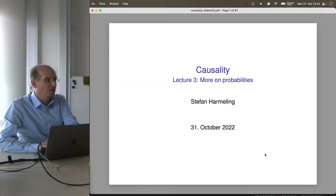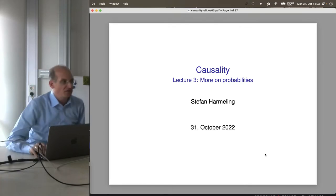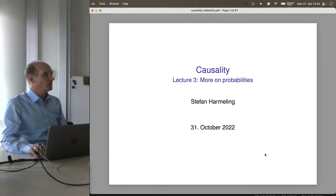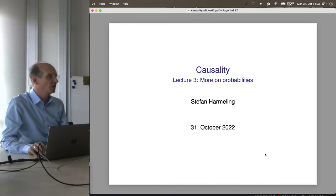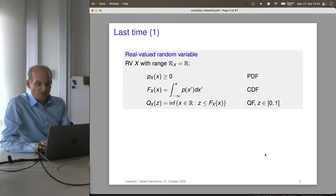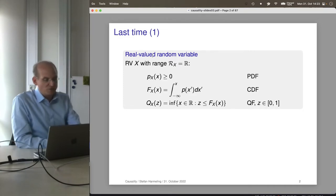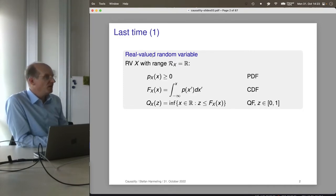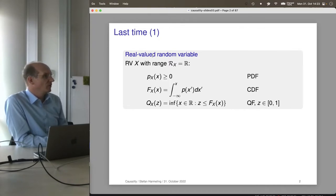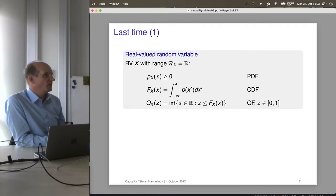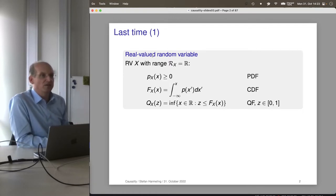Welcome everyone to our next class on causality. Today we continue with probabilities — there's much more to say than what we said last time. Last time we talked about PDFs, CDFs, quantile functions. We talked about real-valued random variables, introduced by sampling from the numpy function rand, generating uniformly distributed values and looking at a histogram. The histogram describes the randomness of this random variable, summarized by the PDF — the probability density function.